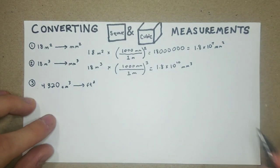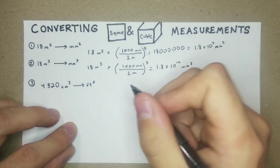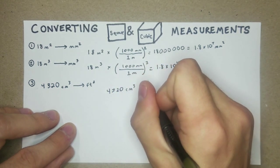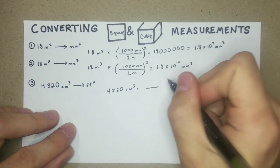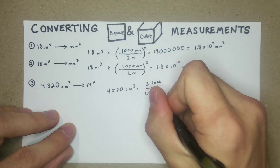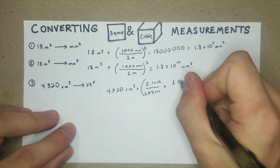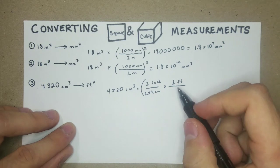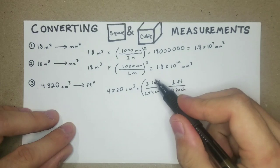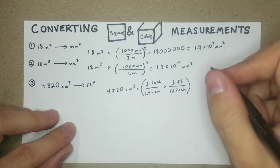Okay, so we know that we have how many centimeters per foot we have. We're going to do 4,320 cubic centimeters times, we can do one inch, and there's 2.54 centimeters per one inch, times one foot, and there's 12 inches per foot. That way we can cancel out the inches and we're left with feet, and we cancel out the CMs once we get this cubed.